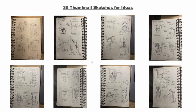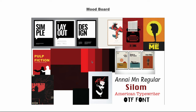Moving on to the mood board. The mood board is just what I want my poster to end up feeling like — examples, colors, fonts I might use, and poster examples. I wanted a simple design poster with black and red colors, like the poster on the bottom. These were the fonts I was thinking of using, but I actually didn't use any of them. I ended up using Times New Roman because it fit my poster best and was the most simple.